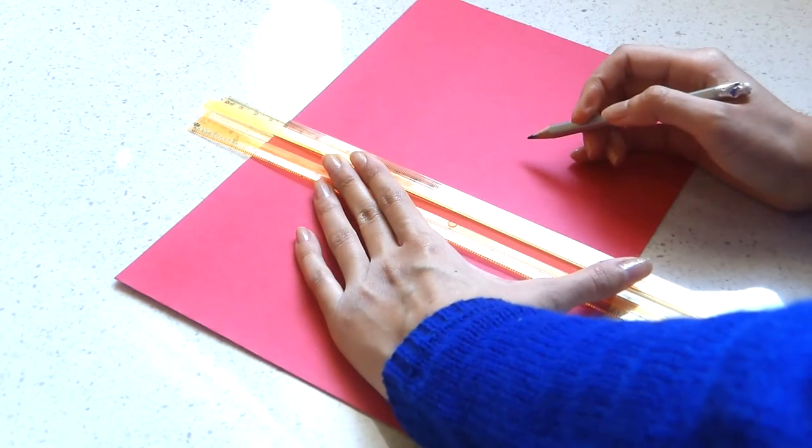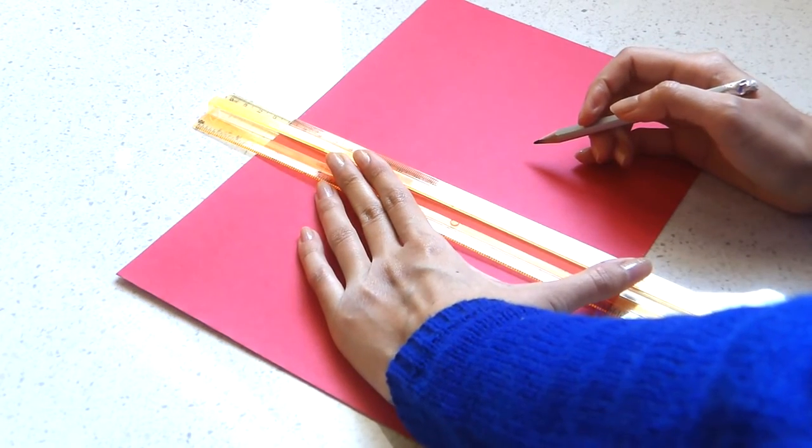You will need two papers of two different colors. One has to be white if you want to make the panda bow notebook. So start working with the paper that's going to be the cover of the notebook.